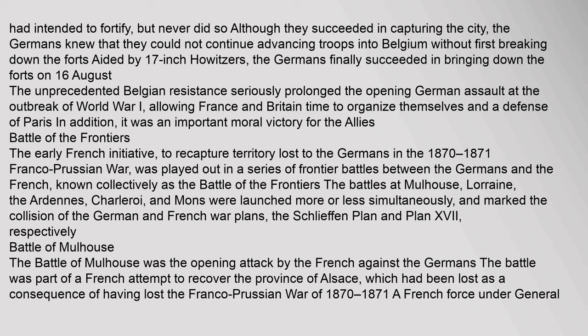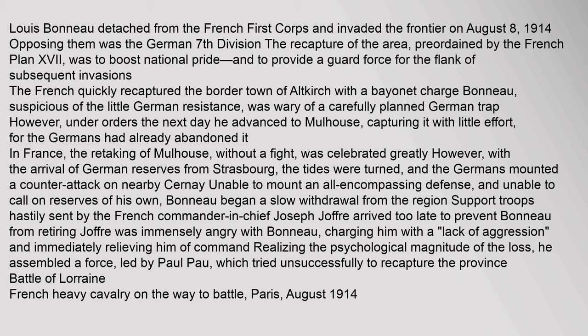Battle of Malouse: The Battle of Malouse was the opening attack by the French against the Germans. The battle was part of a French attempt to recover the province of Alsace, which had been lost as a consequence of the Franco-Prussian War of 1870–1871. A French force under General Louis Bonneau detached from the French First Corps and invaded the frontier on August 8, 1914. Opposing them was the German 7th Division. The recapture of the area, preordained by the French Plan 17, was to boost national pride and provide a guard force for the flank of subsequent invasions. The French quickly recaptured the border town of Altkirch with a bayonet charge.